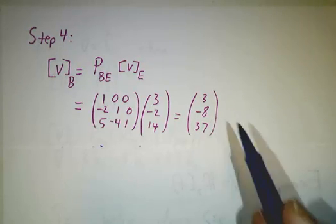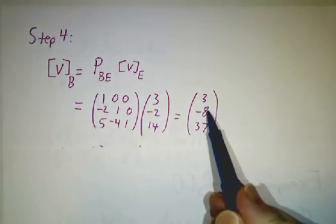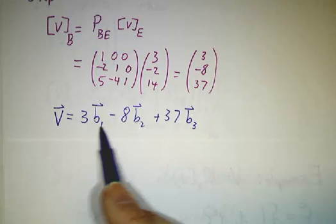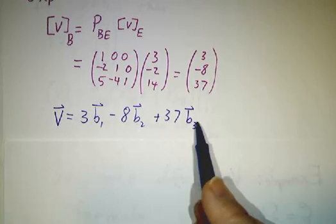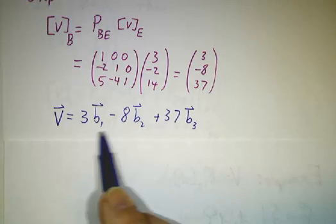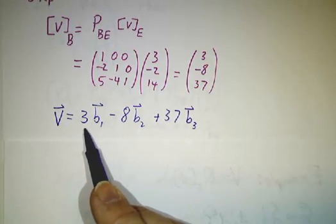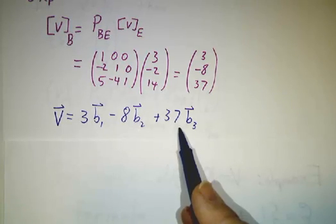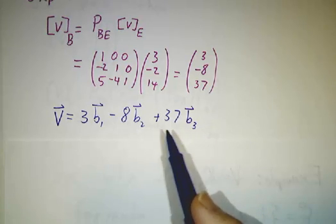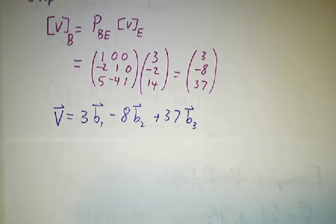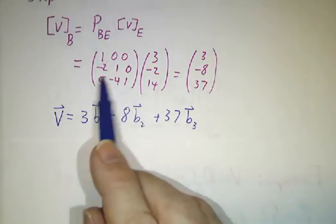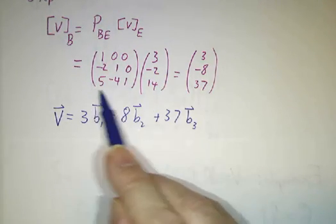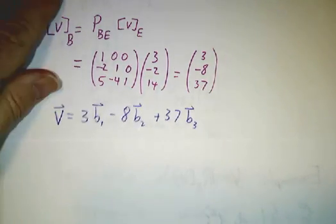So what does this mean? Well, the statement that V in the B basis is 3, negative 8, 37, means that V is 3 times b1 minus 8 times b2 plus 37 times b3. And if you go back and check it and you take 3 times whatever the first basis element was, minus 8 times that second guy, plus 37 times the third guy and you multiply it all out, you will in fact get V. But this was a much easier way. All we had to do is find the coordinates in the E basis, which was easy, multiply by the matrix, boom, out comes the answer.